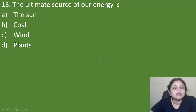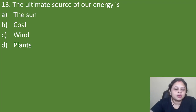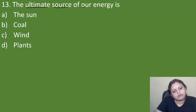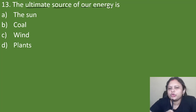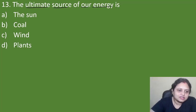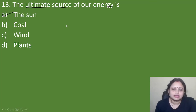Next question: the ultimate source of our energy is — option A: the sun, B: coal, C: wind, D: plants. The ultimate source of our energy is, of course, the sun. The correct answer is option A, the sun.